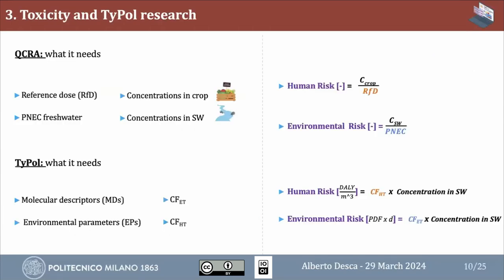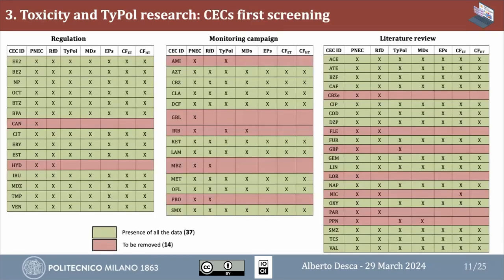For the third phase, we collected all data needed to perform both procedures. For each contaminant we searched for toxicological parameters and checked for presence in TYPOL, including values for molecular descriptors and environmental parameters. At the end of this first screening, we had all values needed for 37 out of 51 molecules; the remaining 14 needed to be removed because parameters were not found or the molecules were not present in the software.